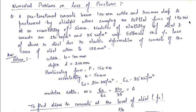Good morning everyone. Today we will do some numerical problems on loss of pre-stress. The first question is: a pre-tensioned concrete beam, 100 mm wide and 300 mm deep, is pre-stressed by straight wires carrying an initial force of 150 kN at an eccentricity of 50 mm. The modulus of elasticity of steel and concrete are 210 kN/mm² and 35 kN/mm² respectively. Estimate the percentage loss of stress in steel due to elastic deformation of concrete if the area of steel wires is 188 mm².